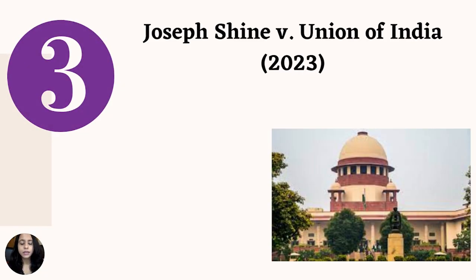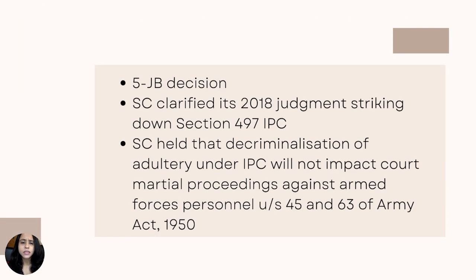Coming to the third very important case in the month of February, we have the judgment in Joseph Schein versus Union of India. This is also a five-judge bench decision in which the Supreme Court was clarifying its 2018 judgment of the same name, which had struck down provisions relating to adultery — that is, Section 497 of the Indian Penal Code. In this case, the Supreme Court held that the decriminalization of adultery under the IPC will not impact court martial proceedings against armed forces personnel, interpreting Sections 45 and 63 of the Army Act 1950.